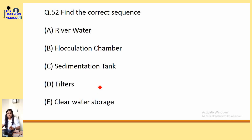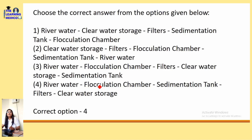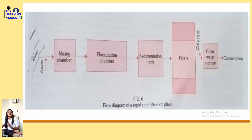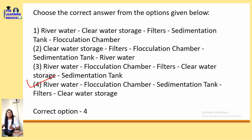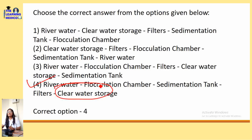Find the correct sequence for water purification. There is a good diagram in K. Park. The sequence is: river → mixing chambers → flocculation chambers → sedimentation tanks → filters → clear water storage for consumption. The correct option is option number 4.